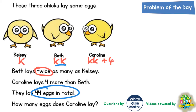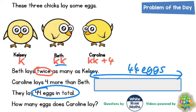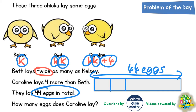From this point we can draw a bar model. The total of the bar is the total amount of eggs, which is 44 eggs. Inside the bar we need to split it into six sections: one for K, another K, another K — that's three, four, five — and one more section makes six for the plus four. So we need five equally sized sections plus an extra one on the end for the plus four.